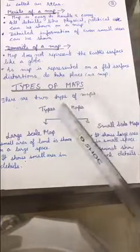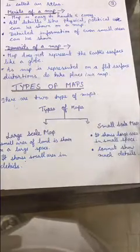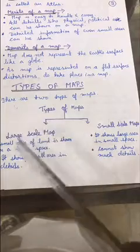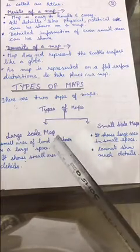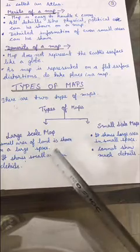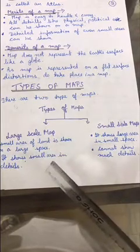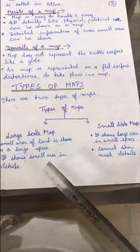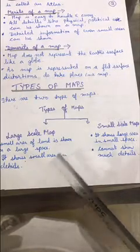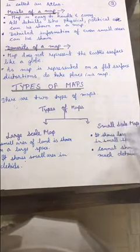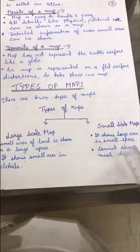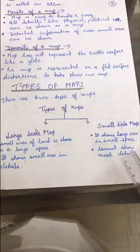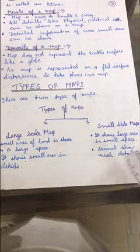Types of maps: There are two types of maps - large scale map and small scale maps. Large scale maps: small areas of land are shown on a large space. It shows small areas in detail like topographical maps. Small scale maps: it shows a large area in a small space. Cannot show much details. Example: the best example for this is the world map.